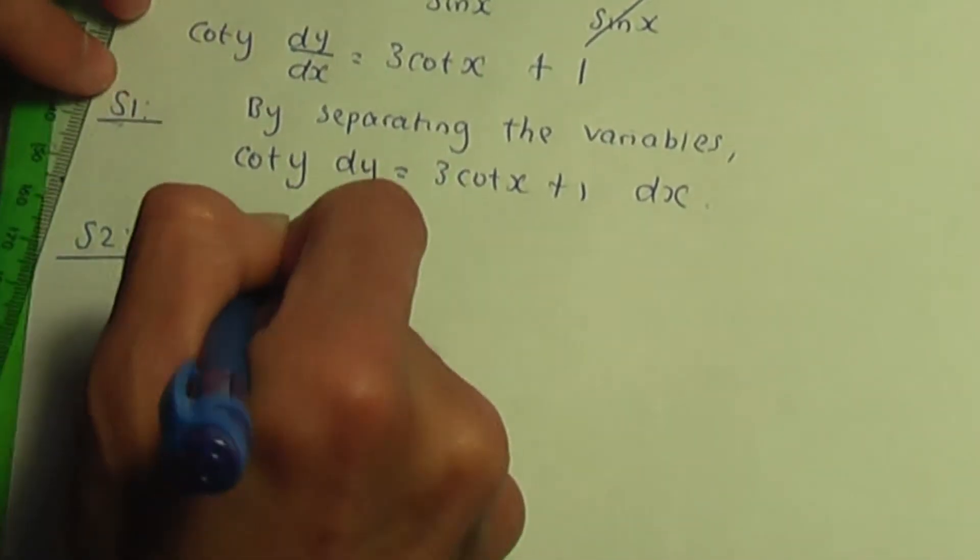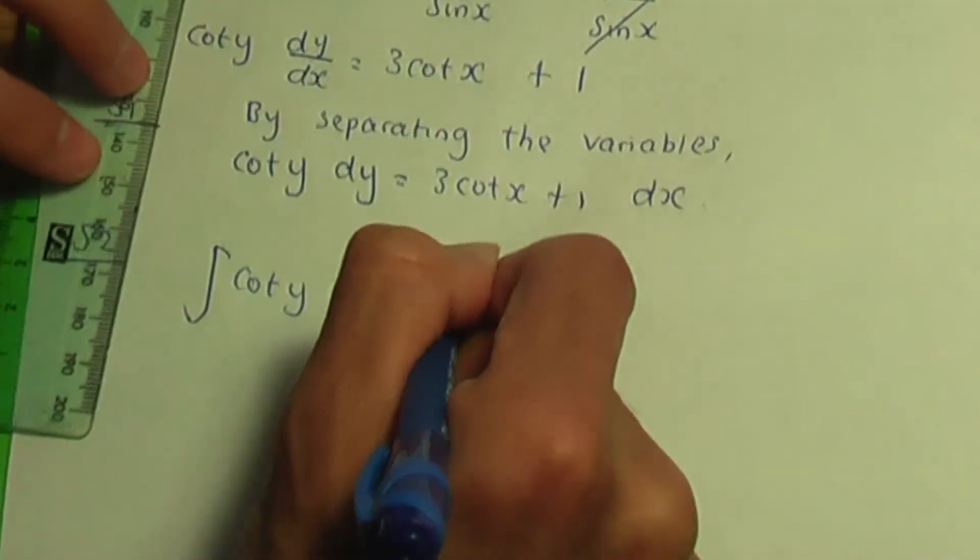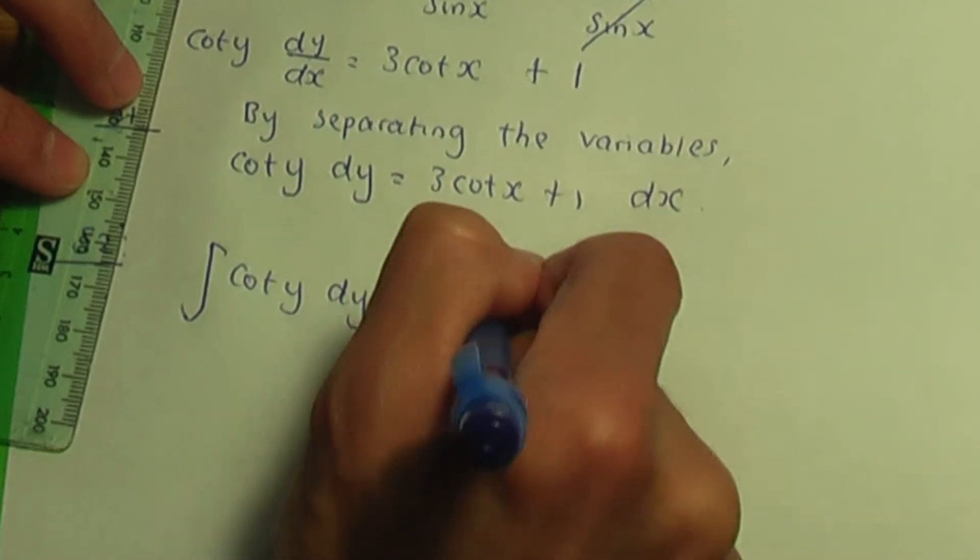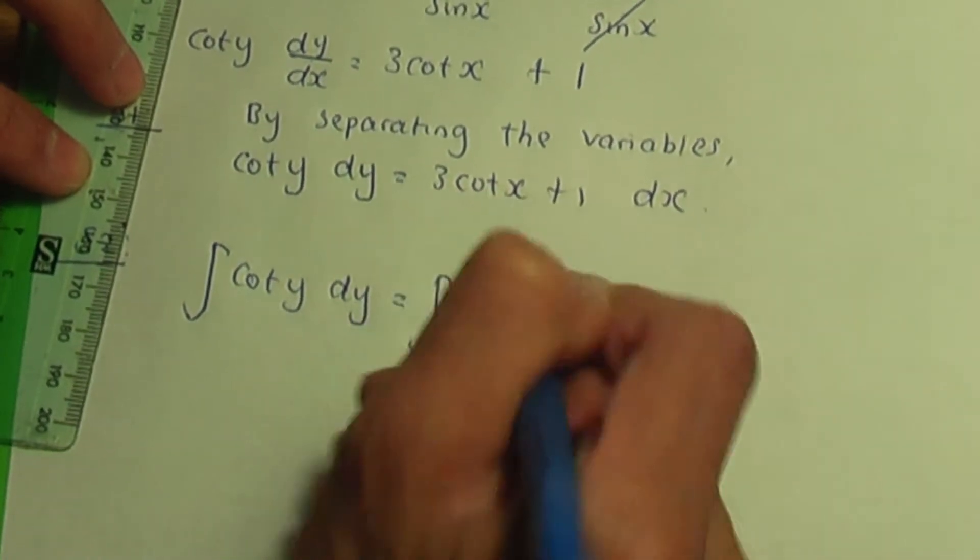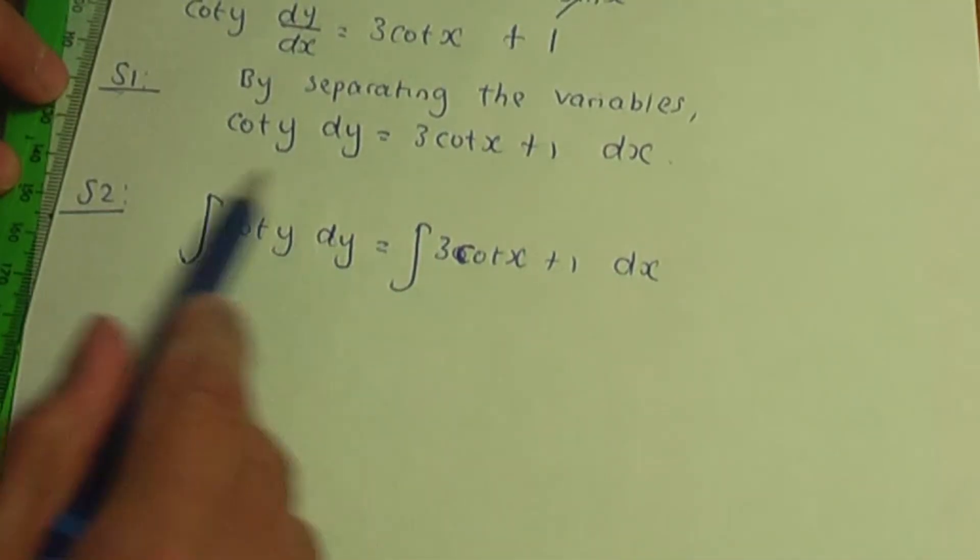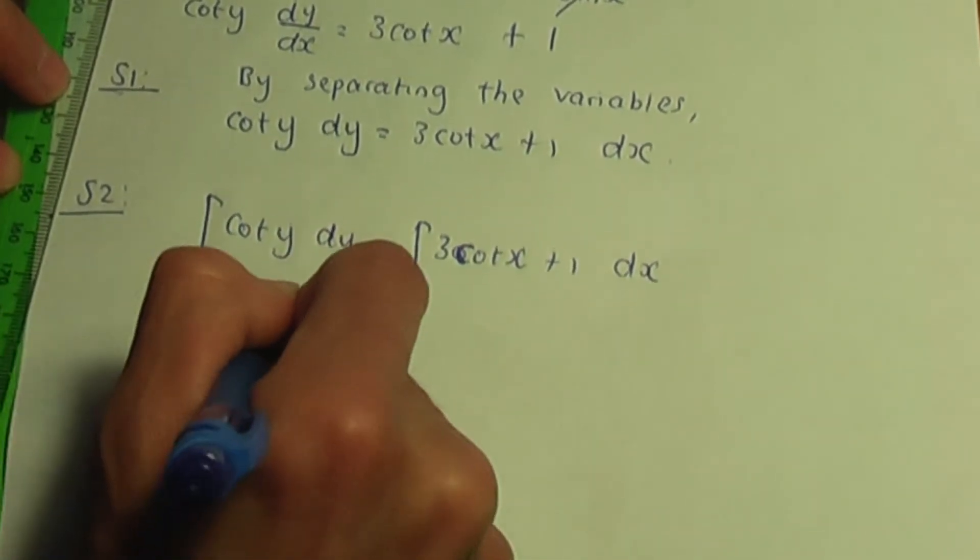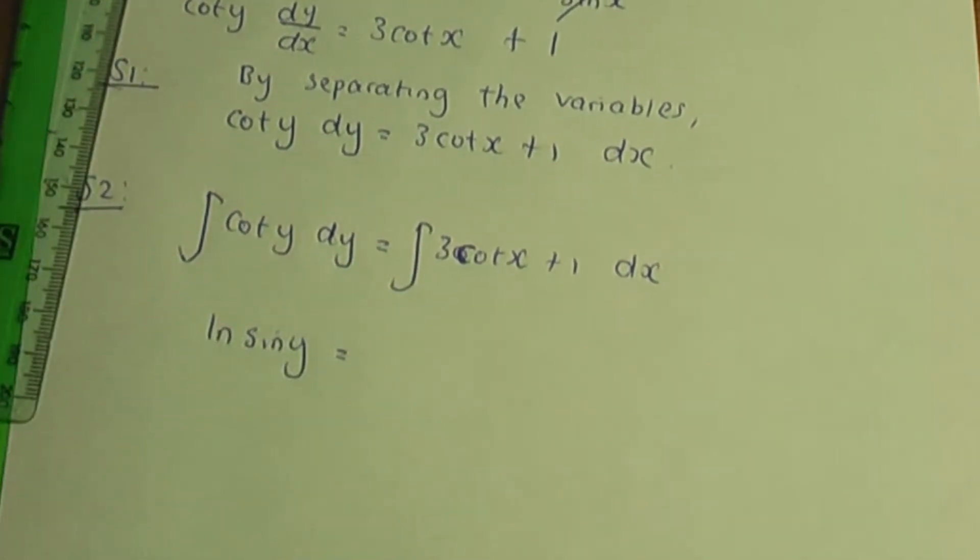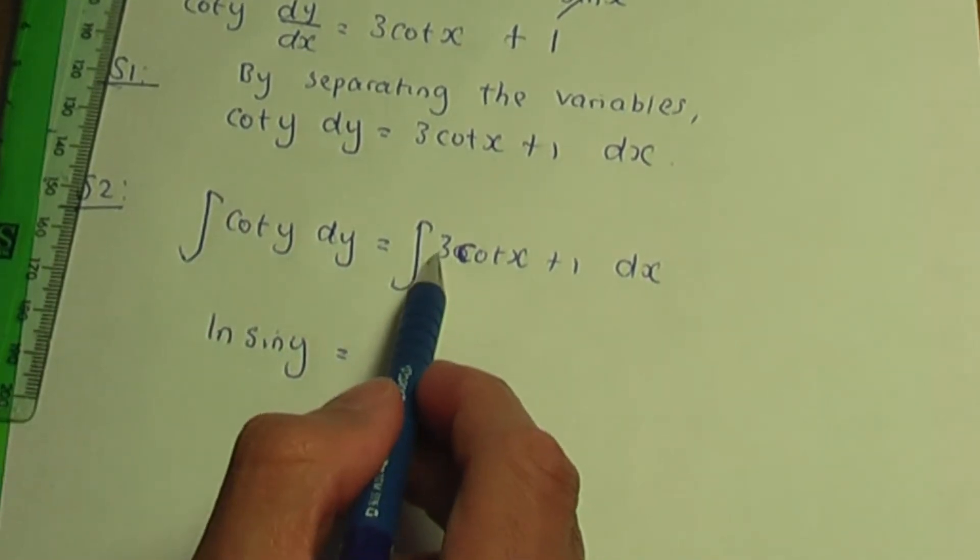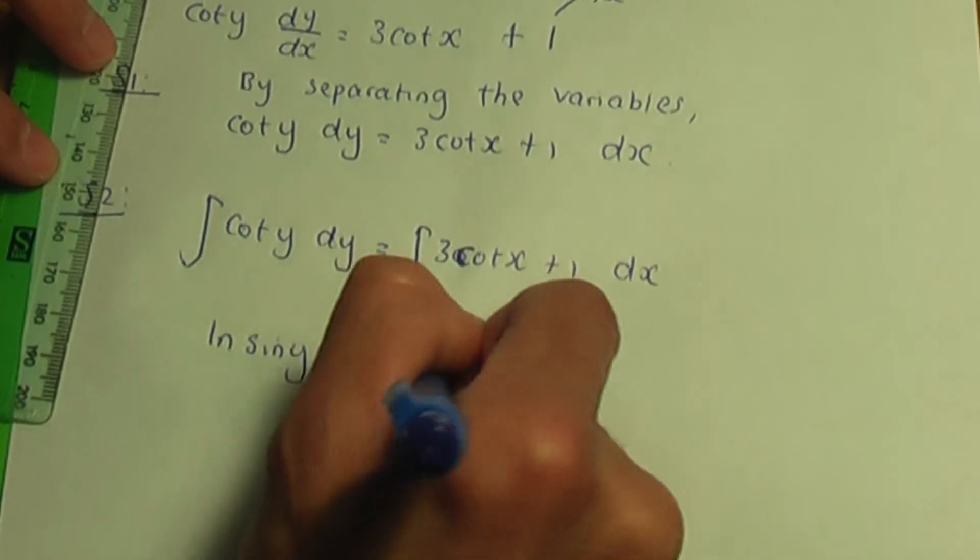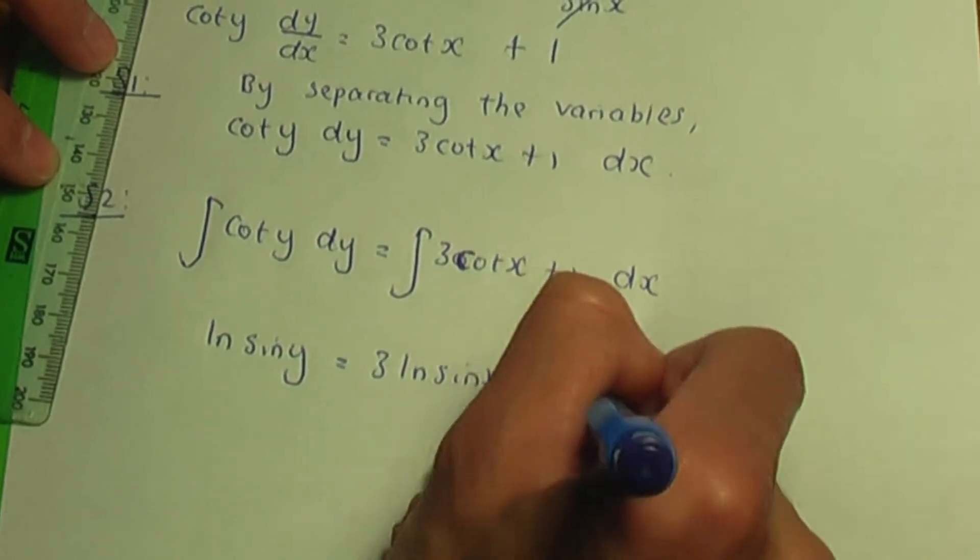So we need to integrate the left hand side, which is cot y with respect to y. We also need to integrate the right hand side terms, which are 3 cot x plus 1 with respect to x. Now let's think about the left hand term. If we integrate cot, the answer is ln sin y. So you should get ln sin y for the left hand term when you integrate cot. And if you integrate 3 cot x, you're going to get 3 ln sin x plus integration of 1 is x.